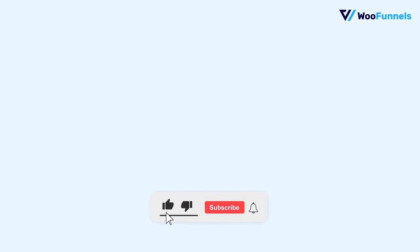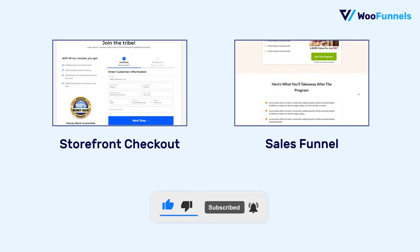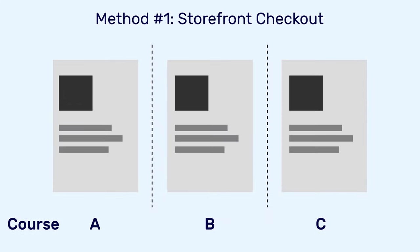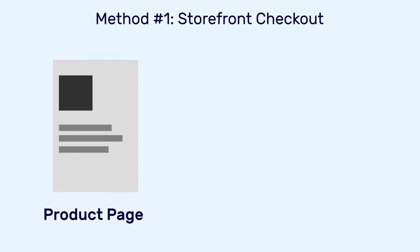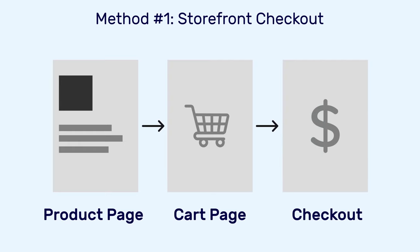Let's start off by looking at the two methods you can use to sell your online courses built using LearnDash through WooCommerce. The first way is through a storefront checkout — where you have a number of courses on display, great if you're selling multiple courses. You can have them in a grid format, users can click whichever course they like, land on its description page, add it to their cart, and proceed to checkout. They can also buy multiple courses and add them to the cart.